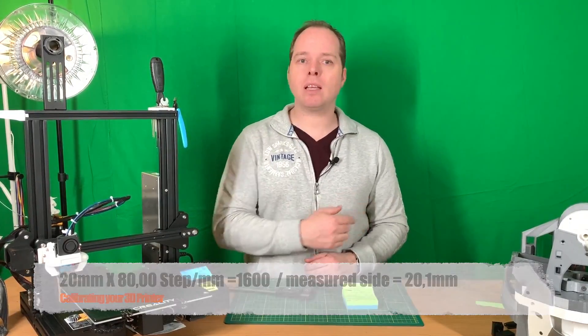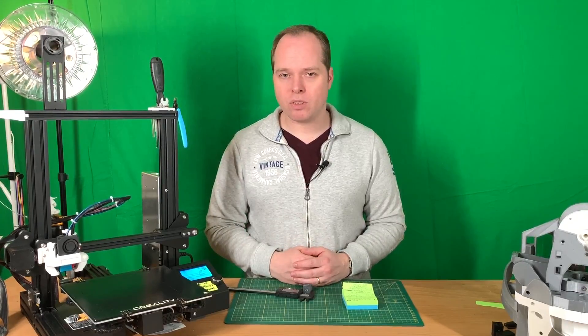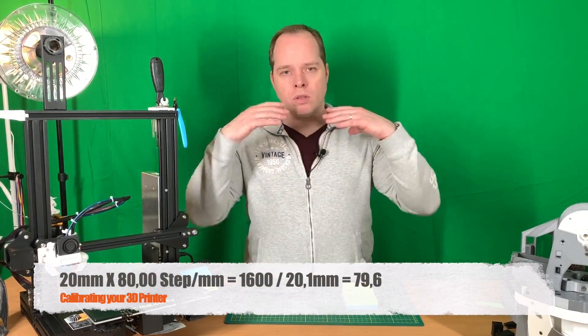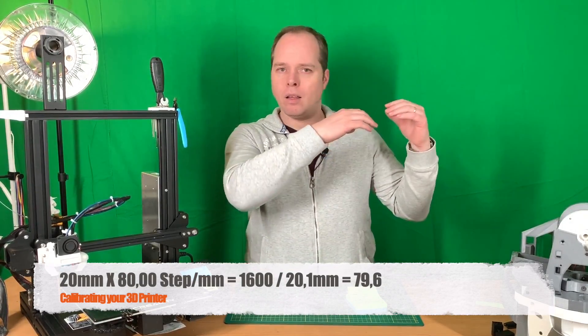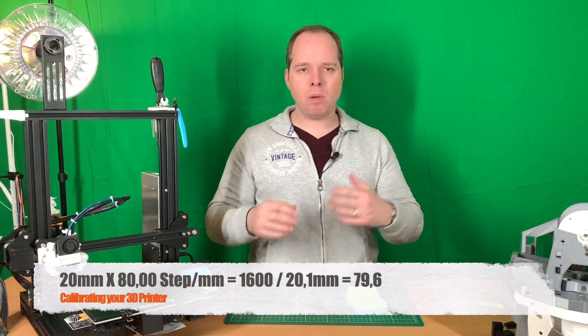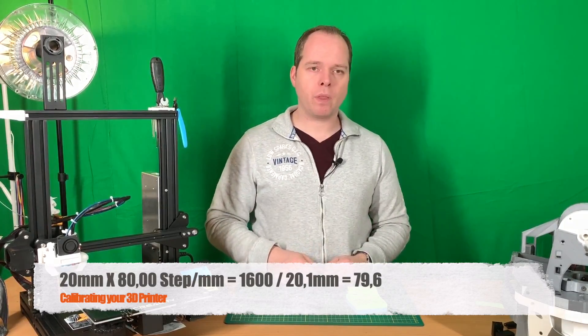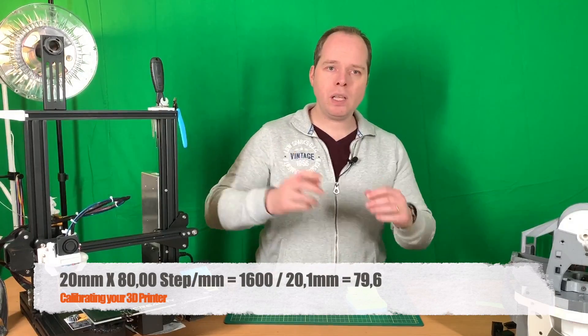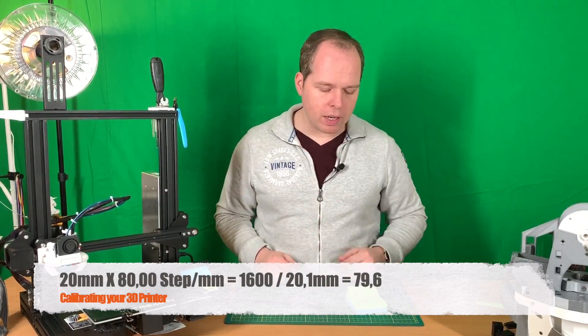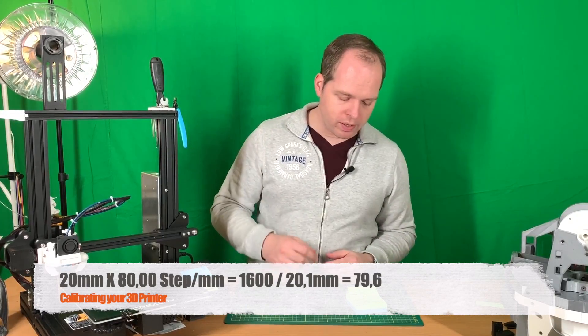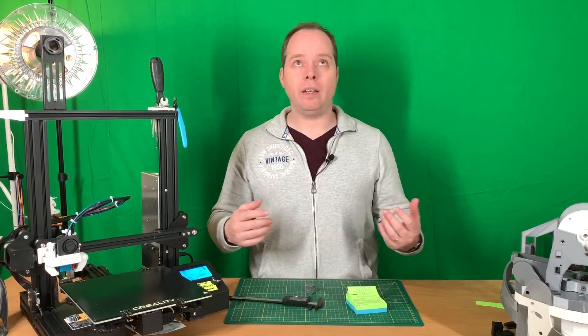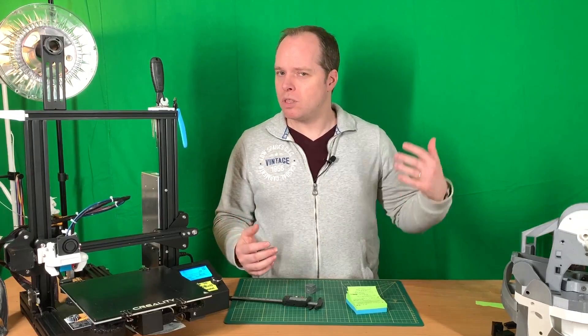Now we are going to use the formula. When we are multiplying the 20 by the 80, we get 1600. 1600, we divide it by the 20.1, and then we get 79.6019.